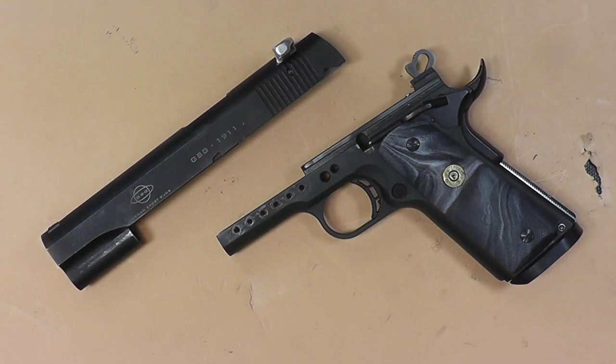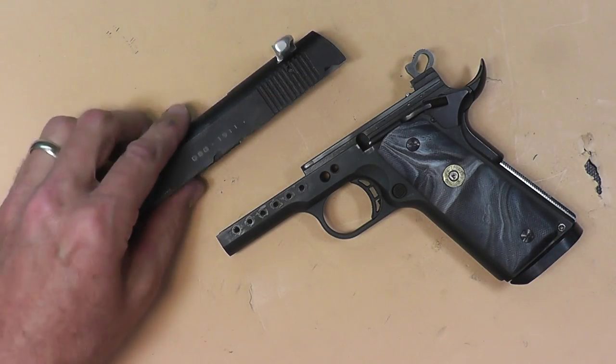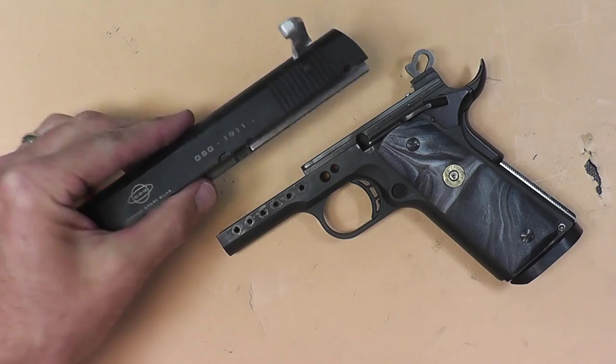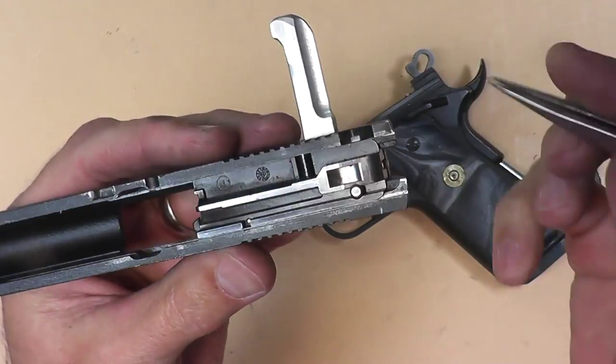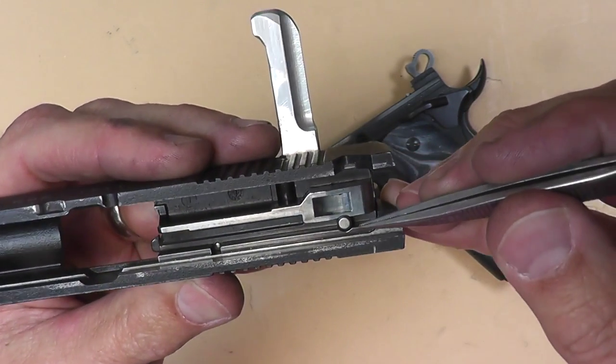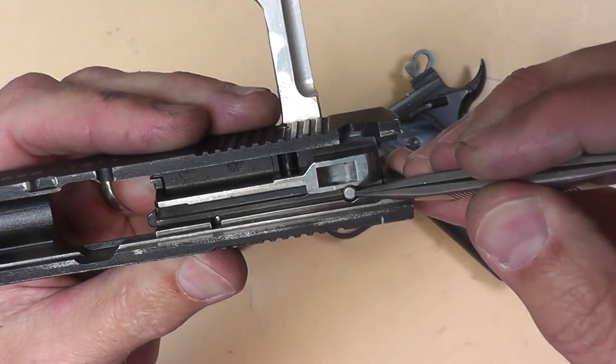Okay, so we've got the gun disassembled to its major components. We basically have the slide here with no barrel, no recoil spring, and then the frame. Now looking at the slide you'll notice inside here in the very back we have the firing pin block right here. It's on a little spring right here.